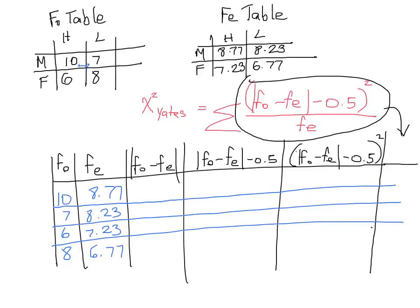So now let's fill in the first row together and then you can do the other rows on your own and we can see if our answers match. Alright, so when you subtract 10 minus 8.77, the absolute value of that answer is 1.23.